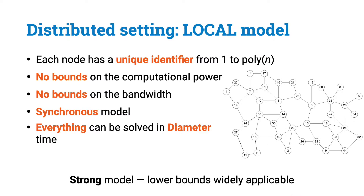Before going further, let me introduce the context. We are in the distributed setting and the distributed network is modeled by a graph where nodes represent computing entities and edges represent communication links. We will denote with n the number of nodes in the graph and with delta the maximum degree. Our model of interest is the LOCAL model of distributed computing. In this model, nodes have a unique identifier, there are no bounds on the size of the messages, and there are no bounds on the computational power of a node. The computation proceeds in synchronous rounds and at each round, each node sends messages to neighbors, receives messages from neighbors, and performs some local computation. The time is measured as the number of rounds needed to solve a problem.